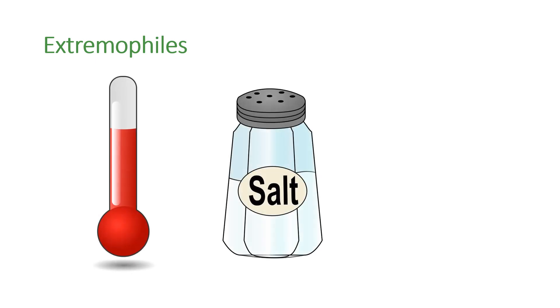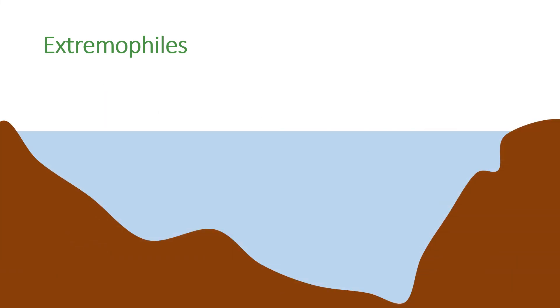Some organisms live in environments that are very extreme, such as high temperatures, high salt levels, or high pressure. These organisms are called extremophiles, and bacteria living in deep sea vents are examples.